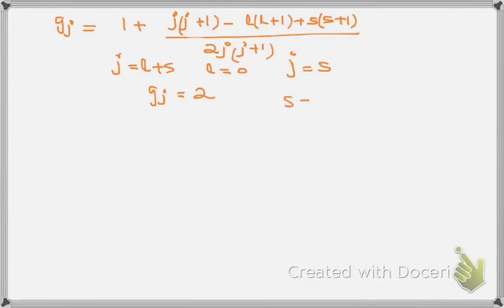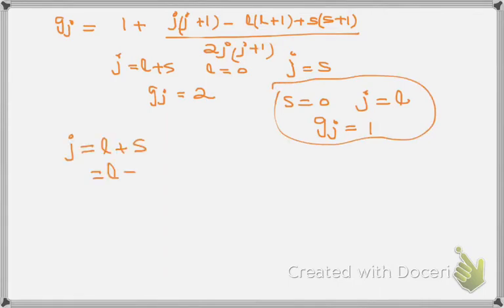When s = 0, j = l, and we have Landé factor equal to 1. We have the value of s equal to ±½. Now for this value, we have to evaluate gj, the value of Landé g-factor, and the splitting on the basis of weak Zeeman effect will be discussed in next lecture.